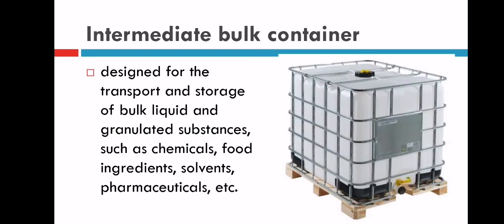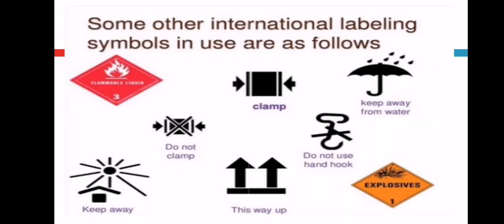Intermediate bulk containers are used for the transportation of liquid or chemical-like substances, fruit, food ingredients, pharmaceutical ingredients. These are used to transport all these things.